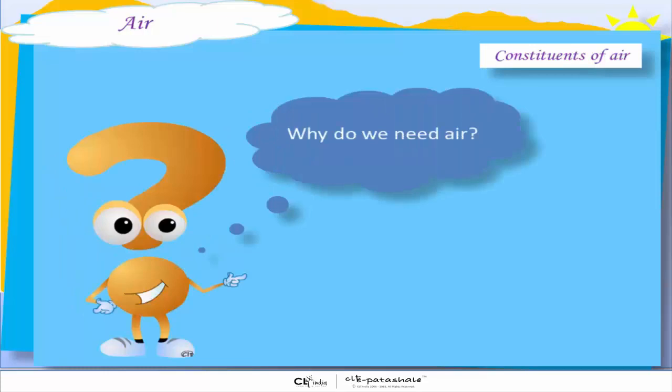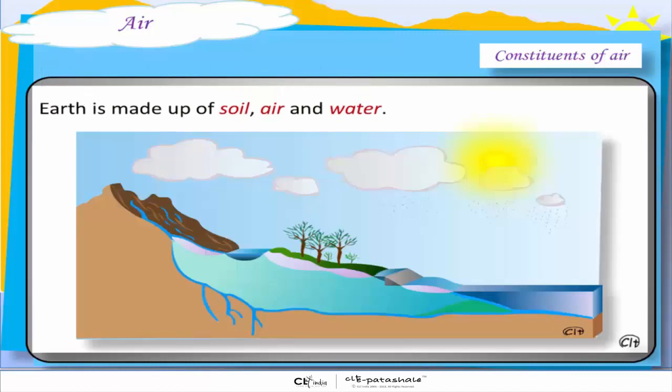Why do we need air? The earth on which we live is made up of soil, water and air. Soil is used to grow our crops, water for drinking, air is used for breathing.